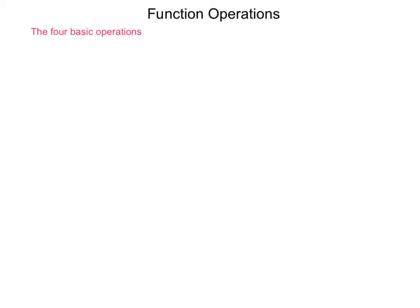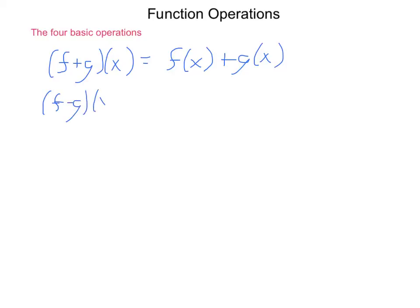There are four basic operations when it comes to math, and four basic operations when it comes to functions. If you have the function f plus g of x, this means we have two functions f and g. The way it's computed is you find f of x and then add to that g of x. Same thing goes with subtraction. If we had f minus g of x, then we take our function f and subtract our function g.